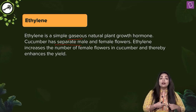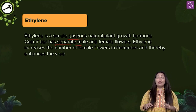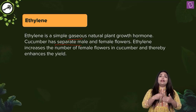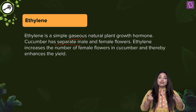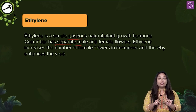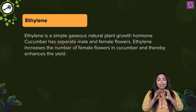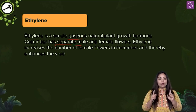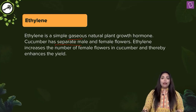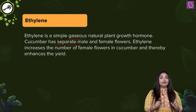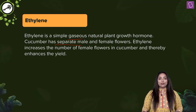You can also get this question as: which of the following hormones can be used for increasing the yield in cucumber? The answer is again going to be Ethylene. So the same hormone can be asked for two different questions. Keep that in mind and make sure you remember what the function of Ethylene is associated with.